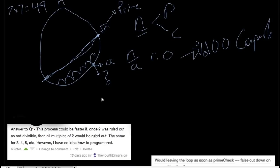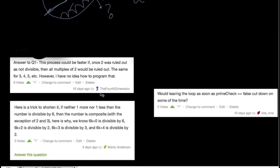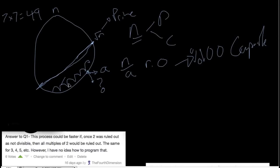So the first set of questions from, for example, the fourth dimension asks, once we rule out 2 as not divisible, then all multiple of 2 could be ruled out. The same for 3, 4, 5, et cetera. So that's a really great point.